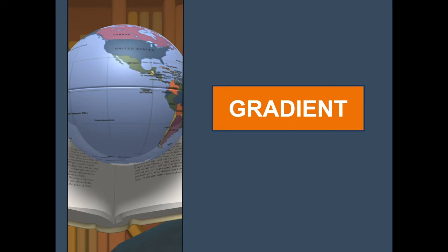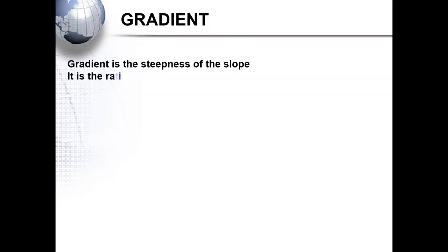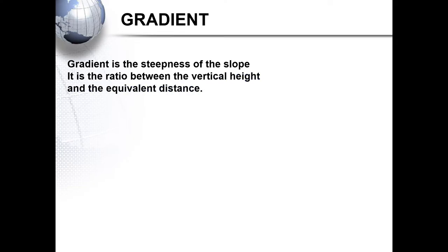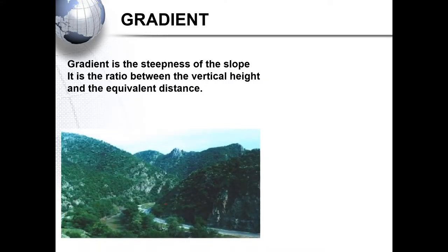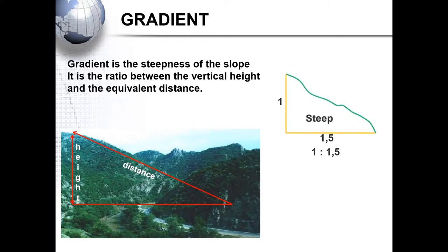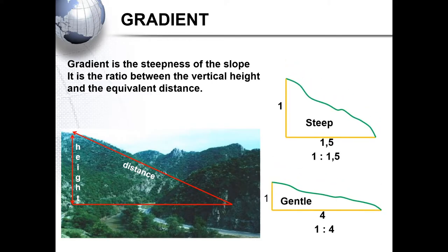Gradient is the steepness of the slope — the ratio between the vertical height and the equivalent distance. It is important to know how to calculate gradient, as various questions can stem from your calculation, such as why a road goes zigzag over a mountain and why it would be difficult for engineers to construct a road on that slope. You need to know whether the gradient is too steep or too gentle.